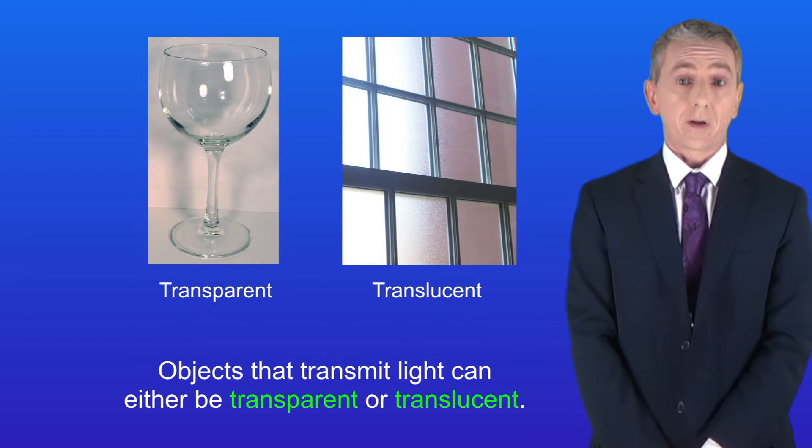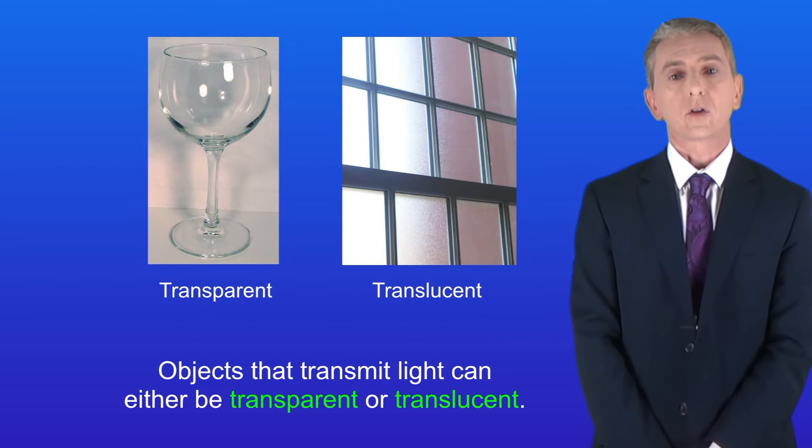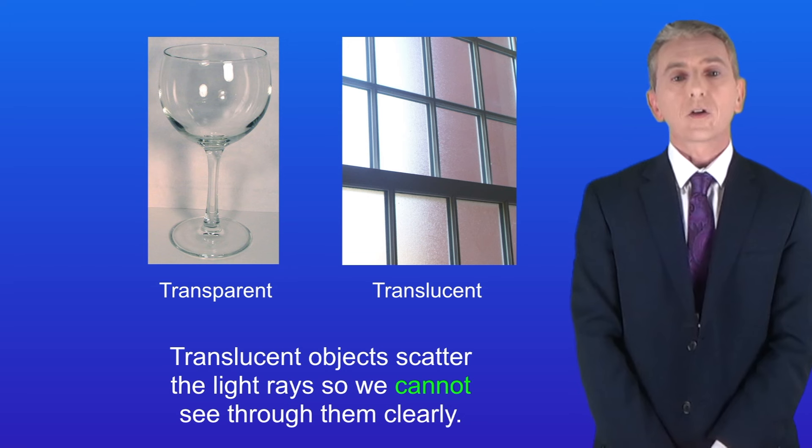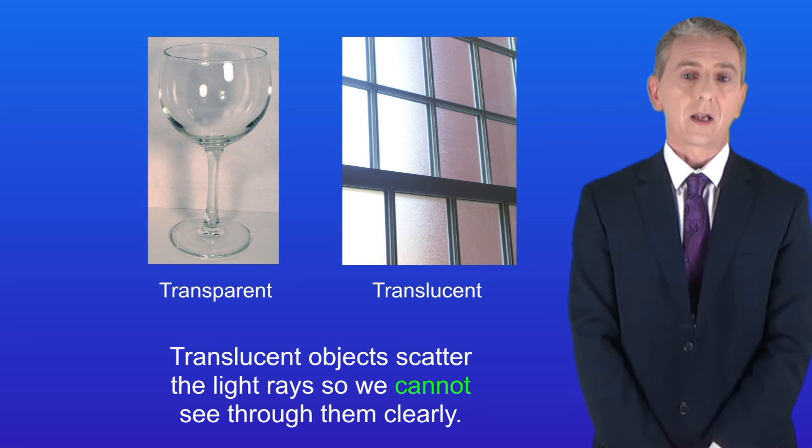Now objects that transmit light can either be transparent or translucent. We can easily see through transparent objects, for example this wine glass. However translucent objects scatter the light rays, so we cannot see through them clearly.